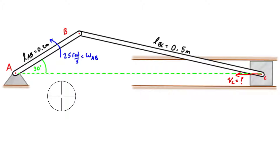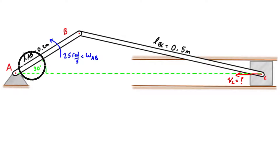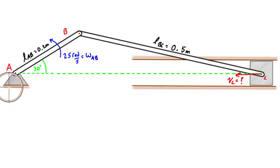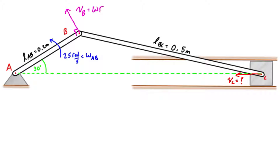Typically we start with information we know on one member and transpose it across the system to find what we're looking for. In this case we want the velocity of C when the crank is at 30 degrees off the horizontal. Because member AB experiences pure rotation, we can use circular motion equations to find the tangential velocity of any point on it. The most convenient point is B — its tangential velocity is 90 degrees from the axis of the member, matching the sense of rotation.